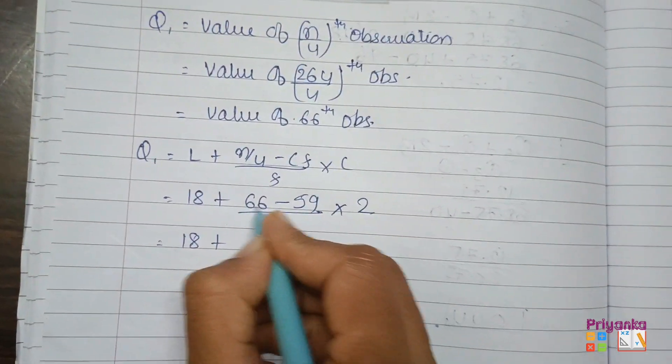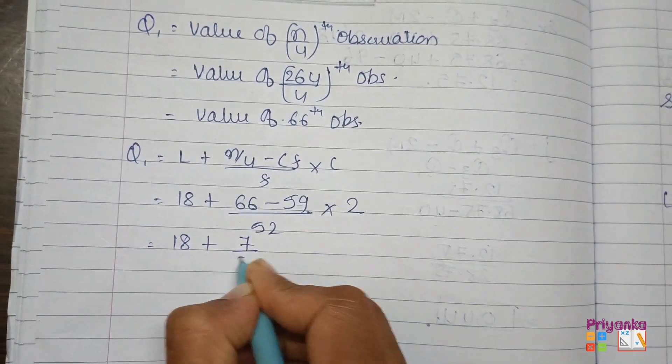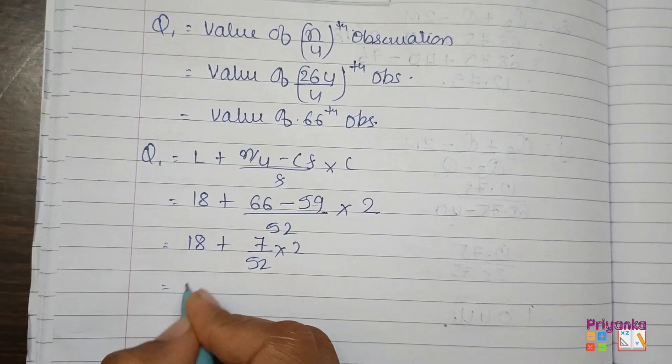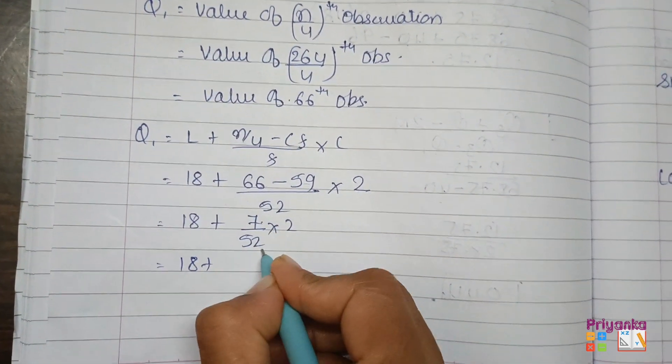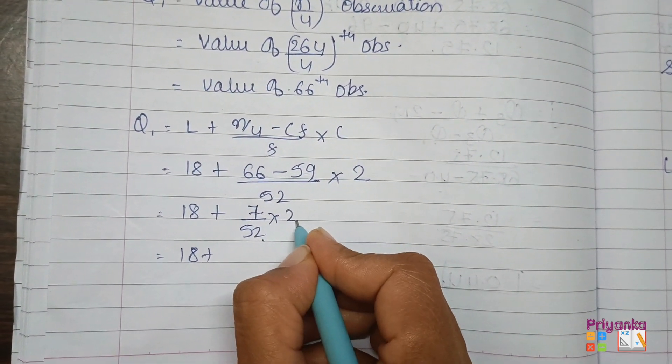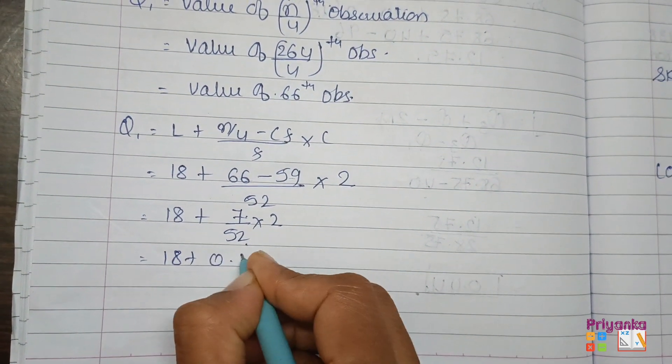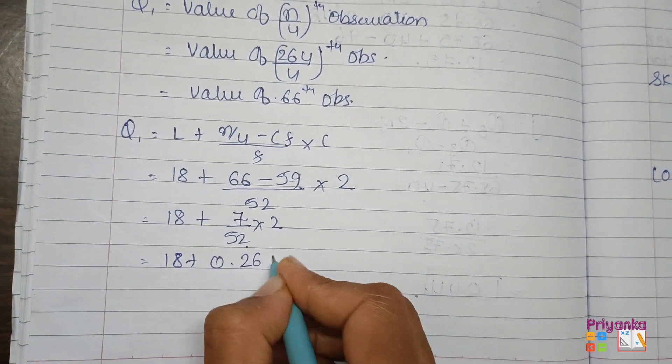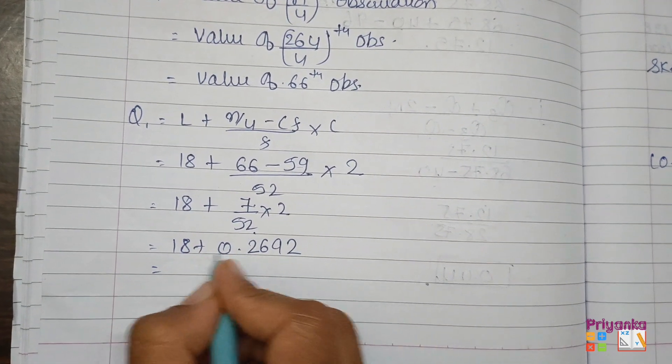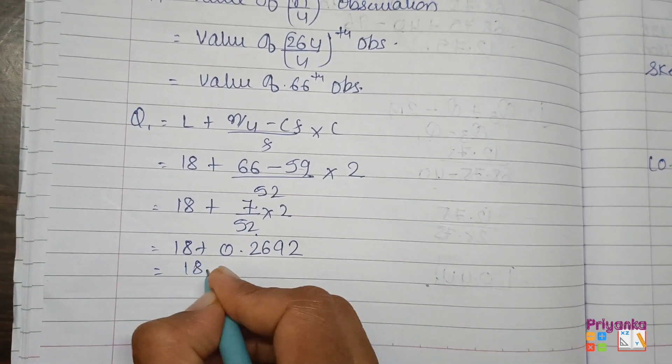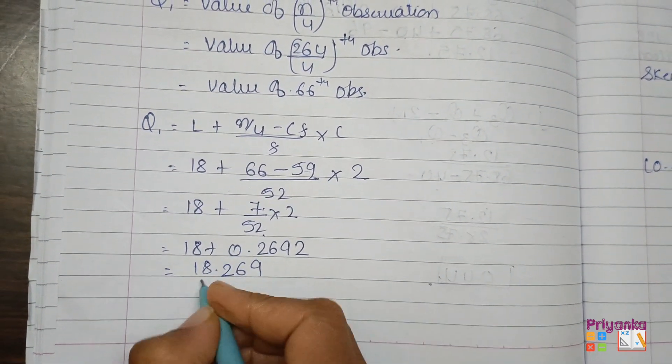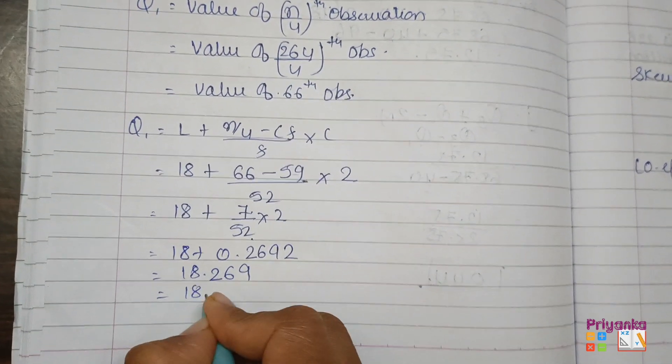Here comes 18 plus the minus of this, 7 upon 52 into 2. 18 plus 7 divide by 52 multiply by 2, you will get 0.2692. By adding it, you will get 18.27. That is Q1.